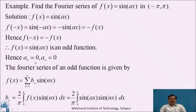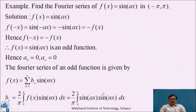For an odd function, a₀ = 0 and aₙ = 0. The Fourier series of an odd function is given by f(x) = summation from n=1 to infinity of bₙ sin(nx), where bₙ = (2/π) ∫₀^π sin(ax) sin(nx) dx. Now, before integrating, we make use of the formula of sin(A)sin(B).